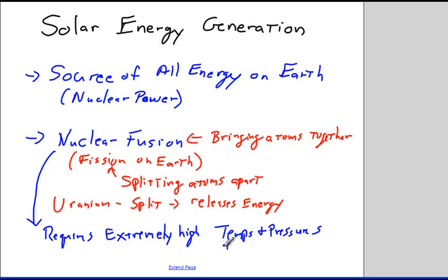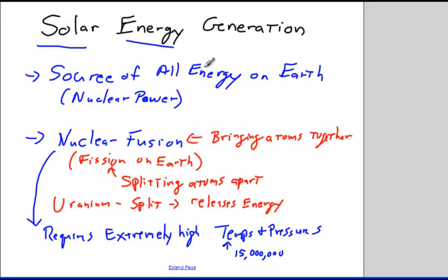How hot? At the center of the sun it is about 15 million degrees, and it requires temperatures of at least 10 million degrees in order to be hot enough to overcome the repulsion that atoms feel for each other. Because they are similarly charged, they don't want to combine together. This is why we're studying solar energy production — the sun is the source of all energy on Earth, and we can get a better understanding of it.